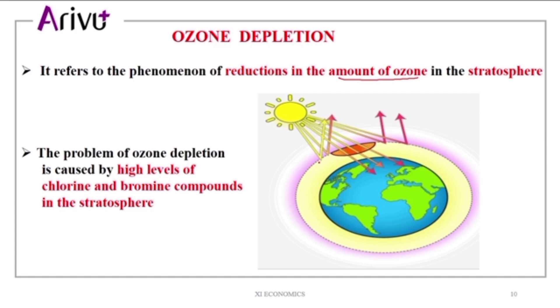It is bromine. Chlorine and bromine will destroy ozone molecules. The amount of ozone has been destroyed by these molecules. This one is a chlorine atom.